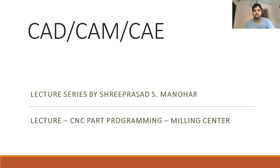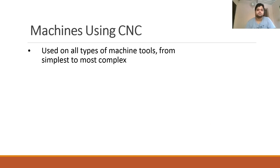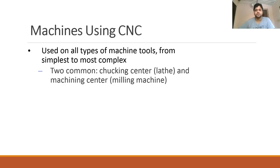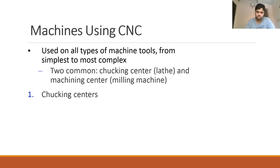Hello friends, today we will see CNC part programming, predominantly for milling centers. There are basically two types of machining centers in CNC: one category is the chucking center, also called the lathe machine center, and the other is the machining center, which is called the milling machine center. We will start in detail with the machining center, that is, the milling machine operation.